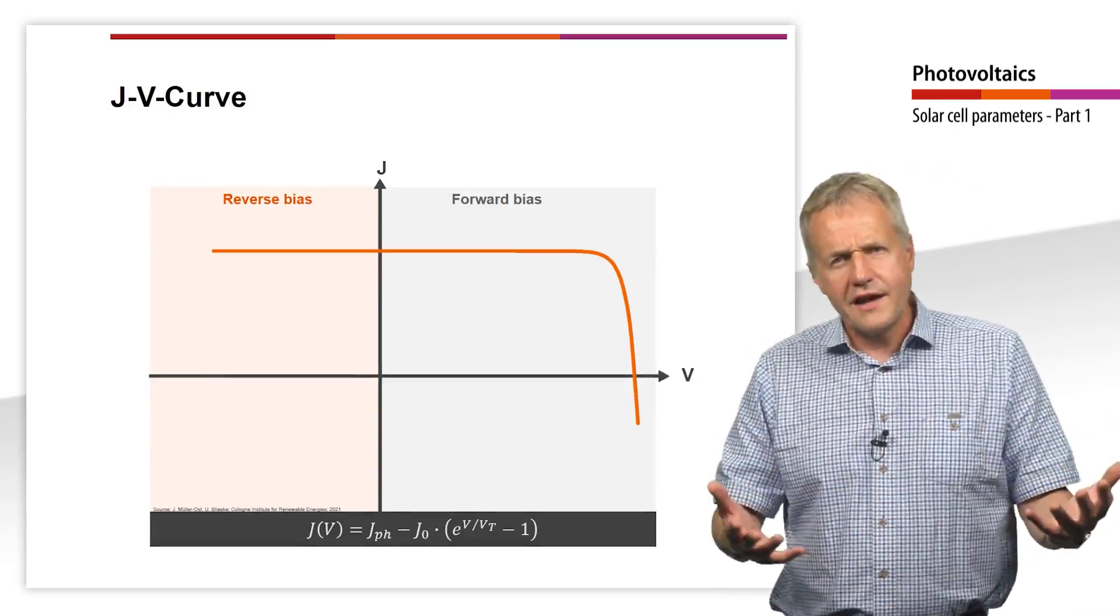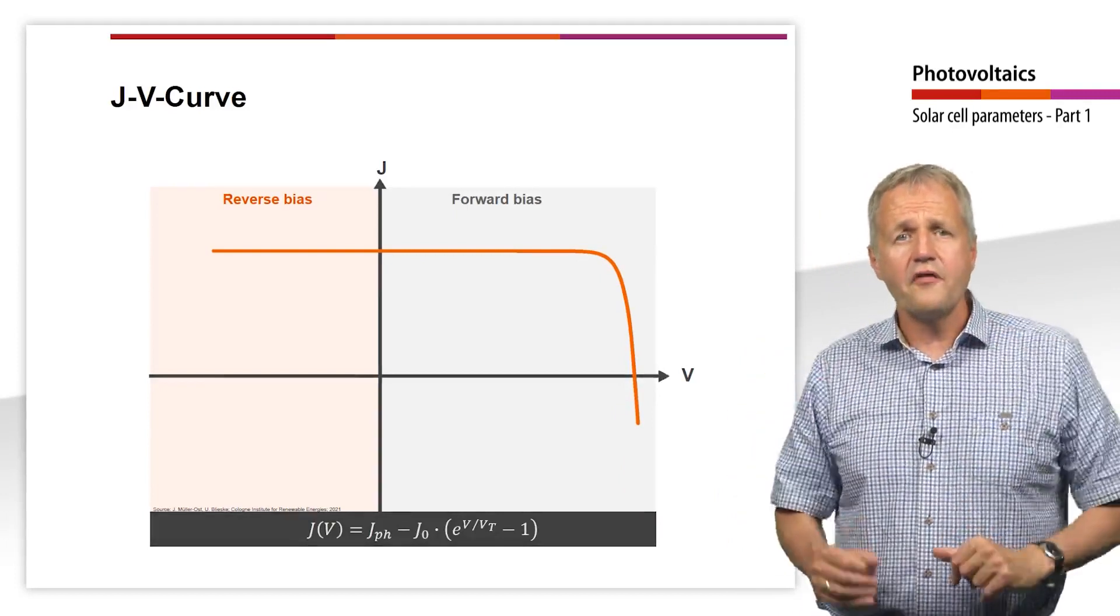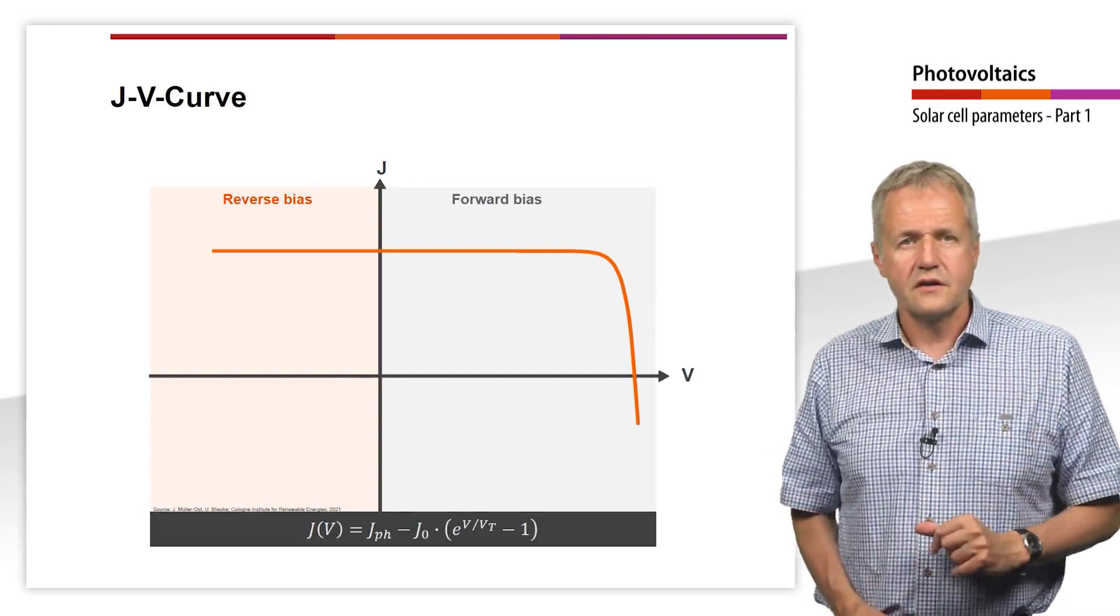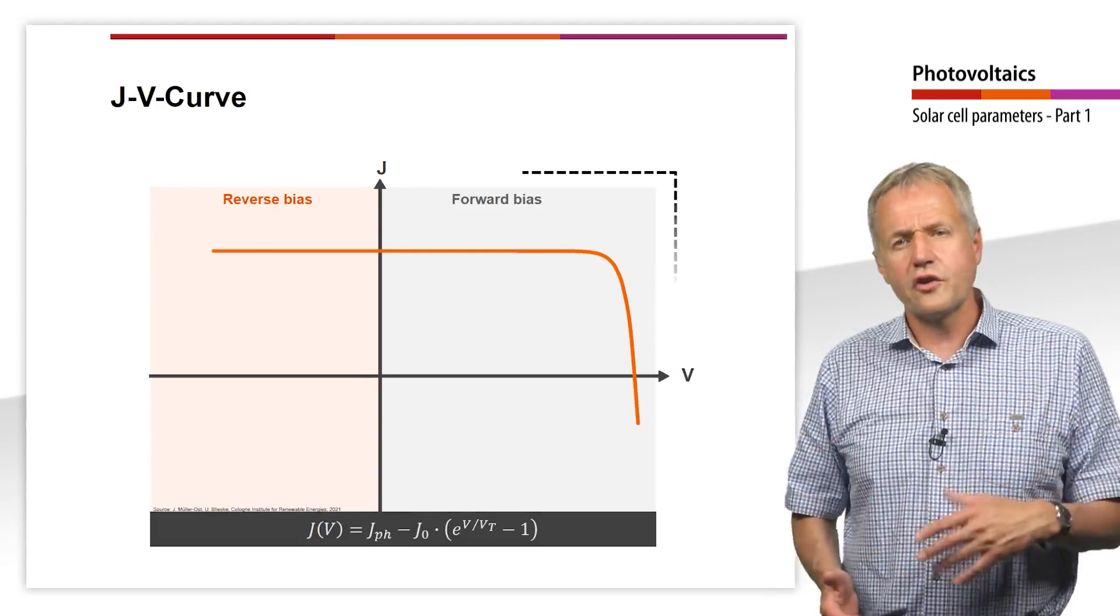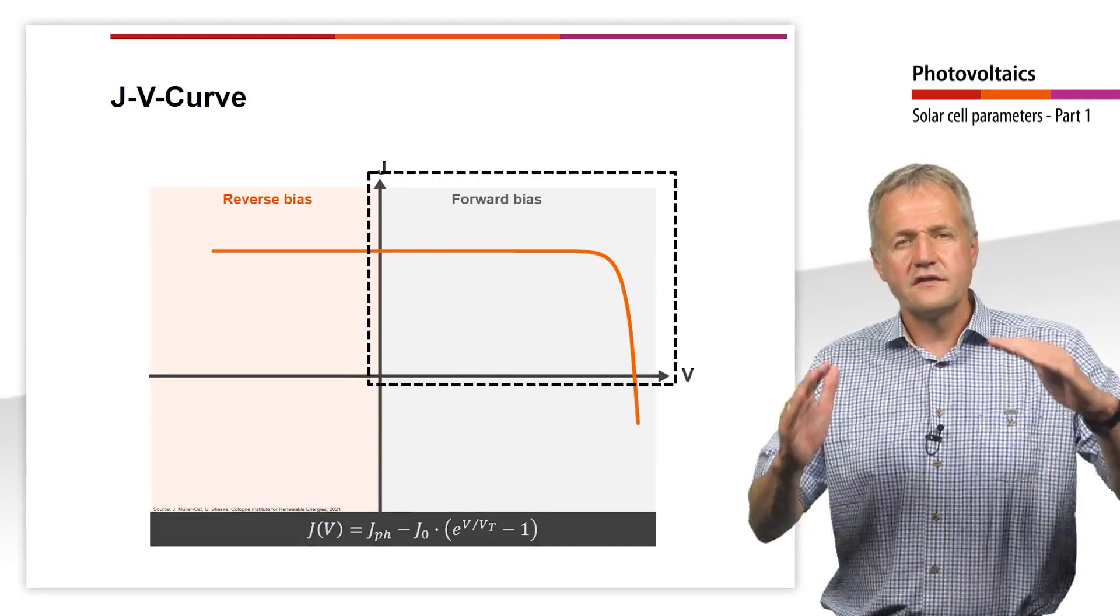When describing the electrical behavior of a solar cell, usually only the area of the characteristic curve in which electricity is generated is of interest. For the following considerations, we will concentrate on the characteristic curve in the first quadrant.